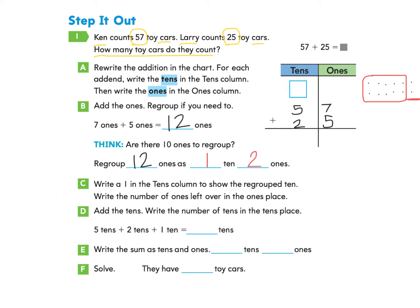We're ready for part C. Write a 1 in the tens column to show the regrouped 10. So this number here, we are going to write right here in the tens column. And then the 2 ones that we have left over, write the number of ones left over in the ones place. So that would go here. So the 2 ones that are left over, we're going to write those here.